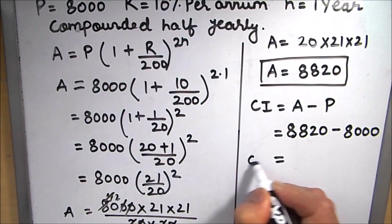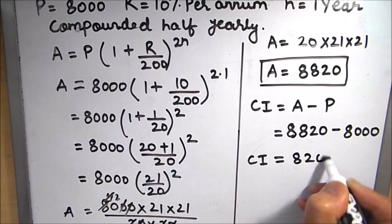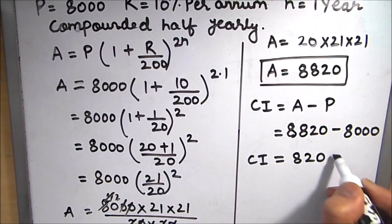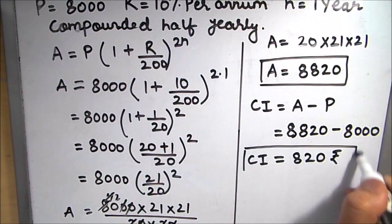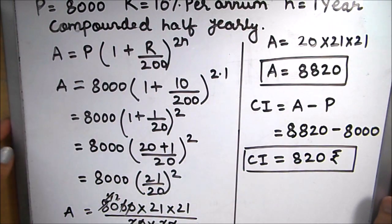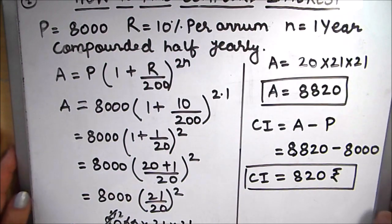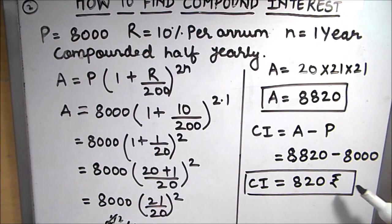The compound interest is Amount minus Principal: 8820 minus 8000 equals 820 rupees. So the compound interest is 820 rupees when the interest is compounded half yearly. These are the steps to find compound interest when the interest is compounded half yearly. I hope this is helpful to you. Thanks for watching.